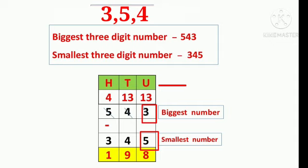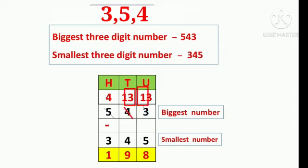Here in the units place: 3 units minus 5 units. We cannot subtract 5 from 3 units. So we untie 1 ten from 4 tens. We strike out 4 in the tens place and write 3 above it. Then we strike out 3 in the units place and write 13 above it.